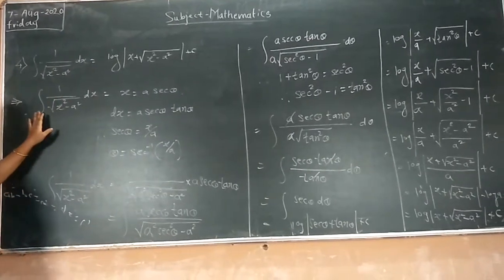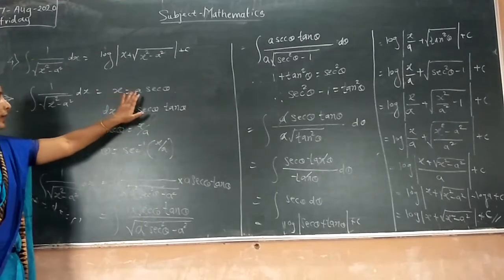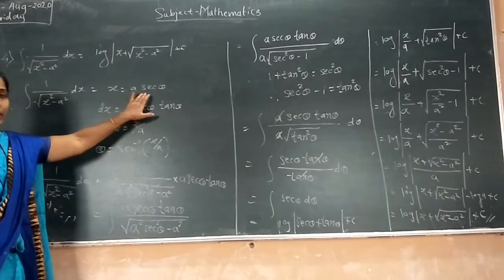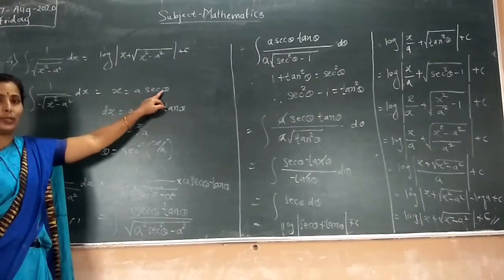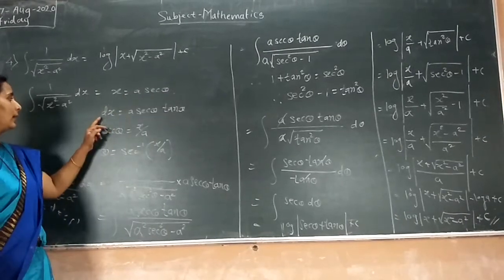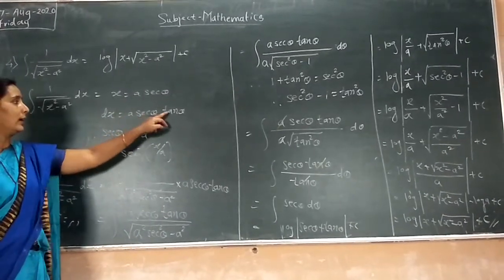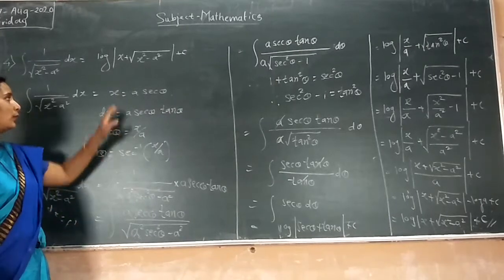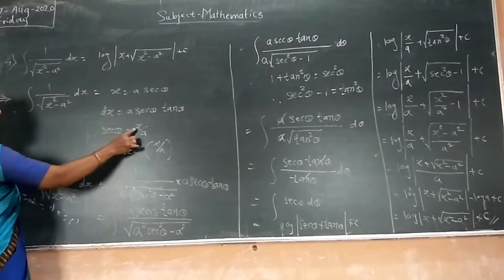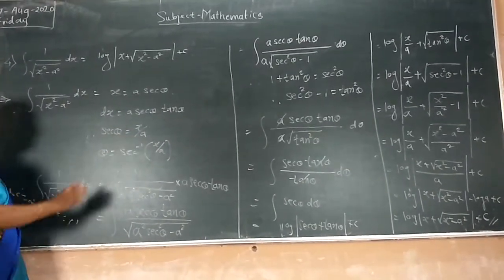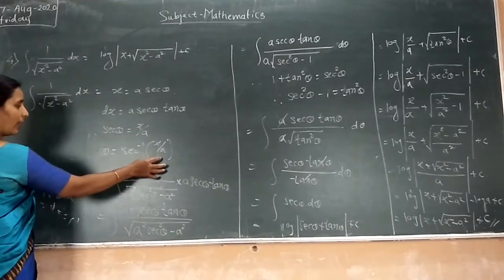To prove this property, we substitute x equal to a·sec θ. So dx is equal to a·sec θ·tan θ dθ. From this we find sin θ, that is x over a, and θ is equal to arc-sec of x over a.